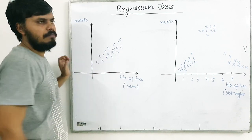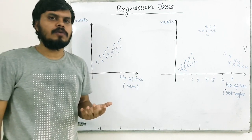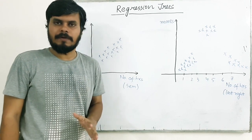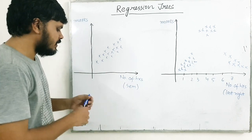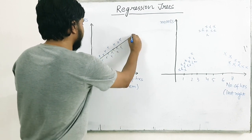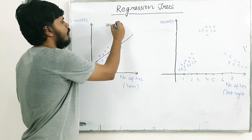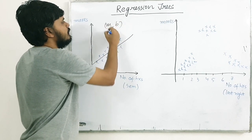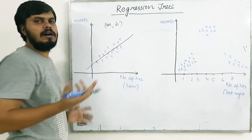So, ab, jaise aapko dikhe gana ki, mera data is linear, what you will do is, aap yahan pe linear regression apply karoge, now I know aapne linear regression abhi nahi padha hoga shayad, so, I'll just tell you the gist of it. So, what you do is, you try to find out this line, you try to find out this line, isko hum kehte hai, best fit line, okay? So, basically, mujhe is line ka m, aur intercept b, nikalna hota hai, aur jaise mujhe yeh mil jaate hai, mujhe line ka equation mil jaata hai, aur mera kaam ho jaata hai.